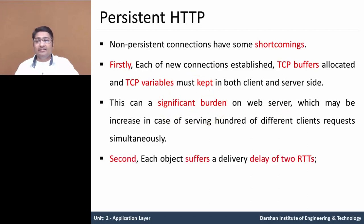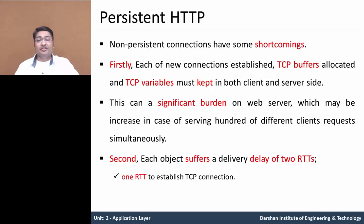The second disadvantage is that each requested object suffers a delivery delay of 2 RTT — as we saw earlier, the first RTT is for establishing the TCP connection and the second is for the request and receiving the object. So each object suffers a delivery delay.